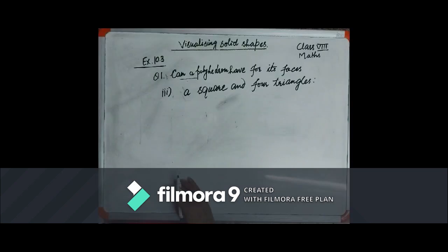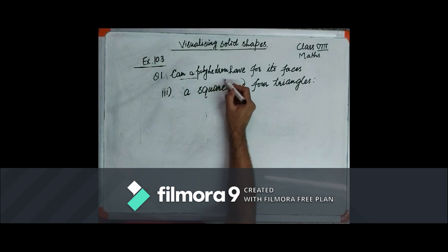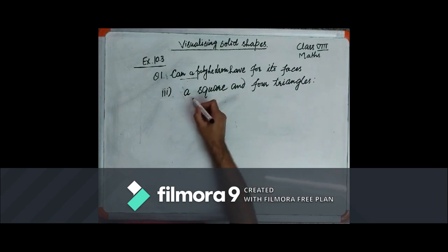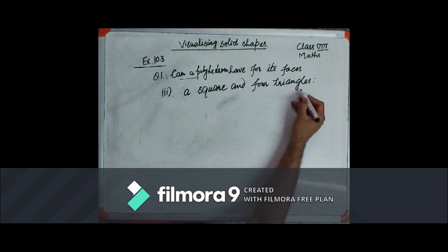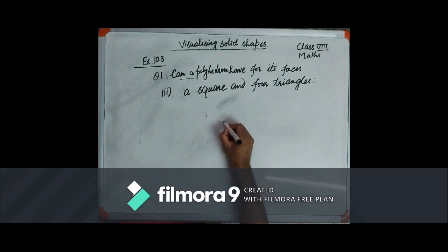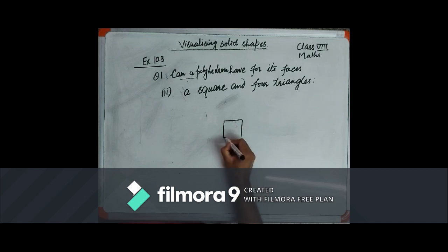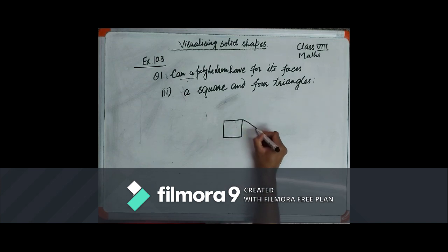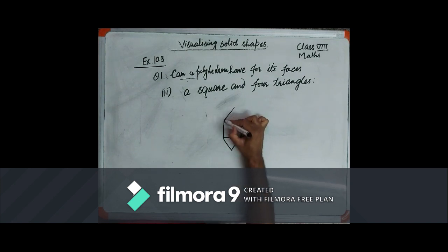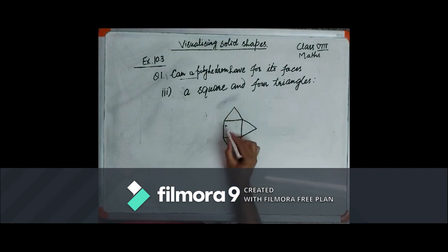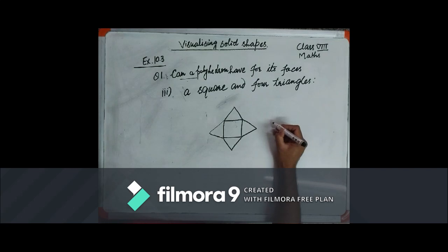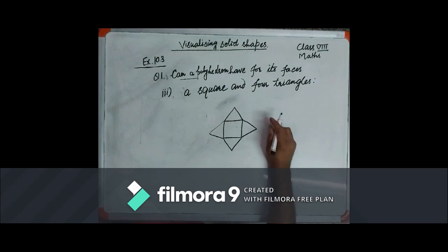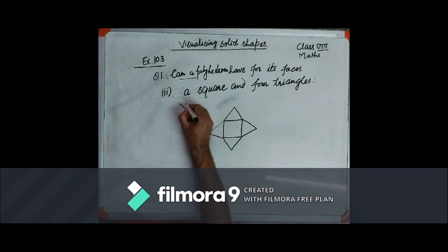The third part is: can a polyhedron have for its faces a square and four triangles? Yes, of course. These are four components in total. Using the square as a base and the four triangles as lateral surfaces, we can create a square pyramid. So the answer would be yes.